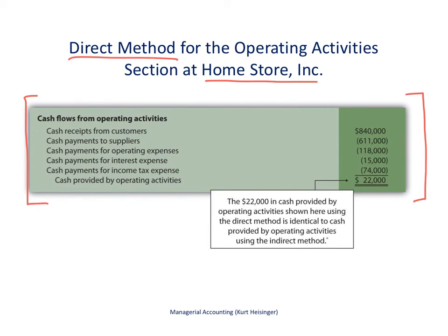For example, cash receipts from customers is the first line — we received $840,000 in cash from customers. We made cash payments to suppliers for our inventory of $611,000. We made cash payments for operating expenses of $118,000, cash payments for interest expense of $15,000, and cash payments for income tax expense of $74,000. It is very important to point out that this final number — $22,000 cash provided by operating activities — matches the separate video using the indirect method. It's the same exact dollar amount; we're just getting to it using a different approach, the direct method.